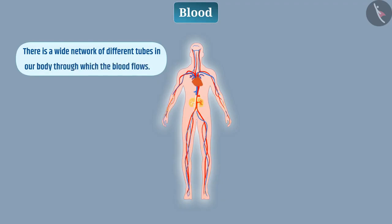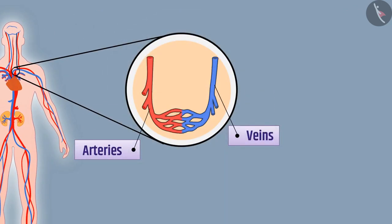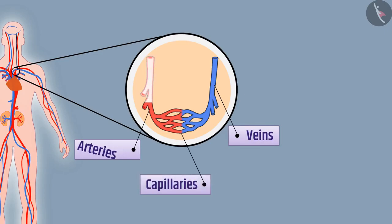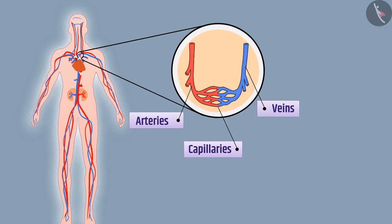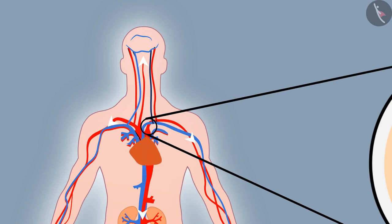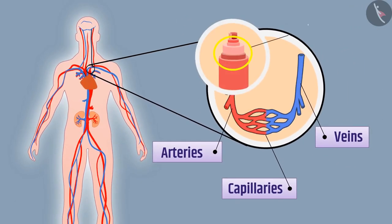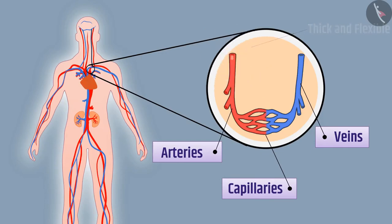There are three types of blood vessels: arteries, veins, and capillaries. Arteries carry oxygenated blood from the heart to various parts of the body. Since the heart pumps blood into the arteries, blood flows with high pressure. The walls of the arteries are thick and flexible so that they can bear this high pressure. Each artery is divided into smaller vessels.